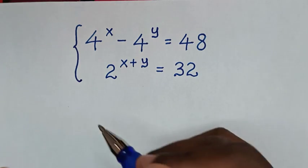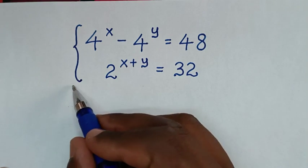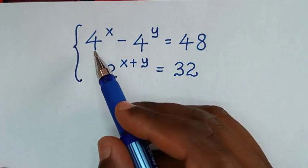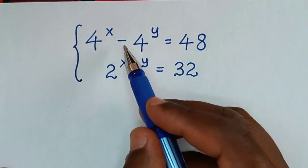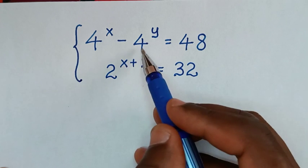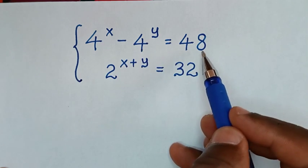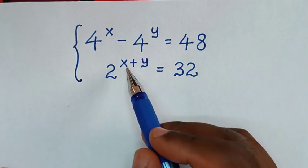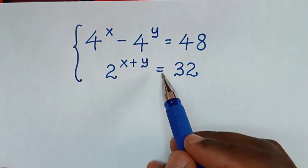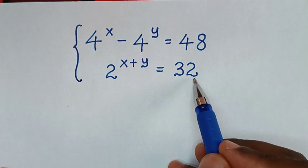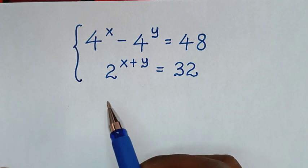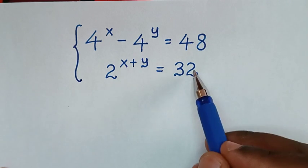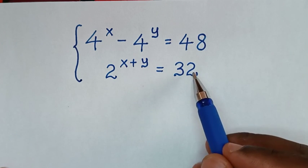Hello, you are welcome to solve this math problem, which is 4 power of x minus 4 power of y is equal to 48, and 2 power of x plus y is equal to 32. We need to find the value of x and y from these two systems of equations.